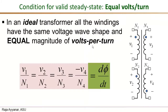Coming to the first rule — equal volts per turn — in an ideal transformer, neglecting the resistances of the windings, the leakage inductances, and so on, all the windings have the same voltage wave shape. So if you apply a sine wave, all the other windings will have the same frequency and same phase relationship.